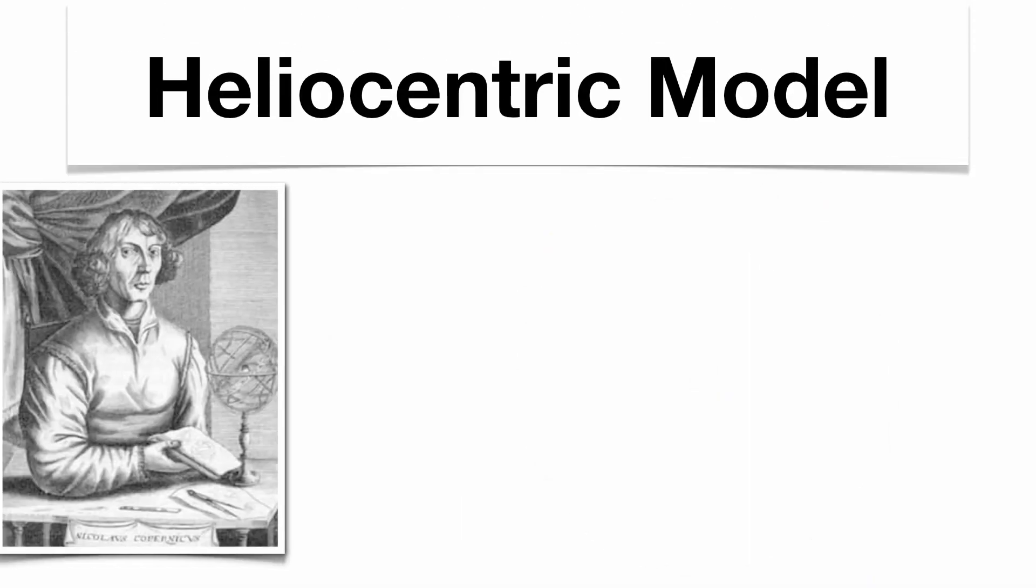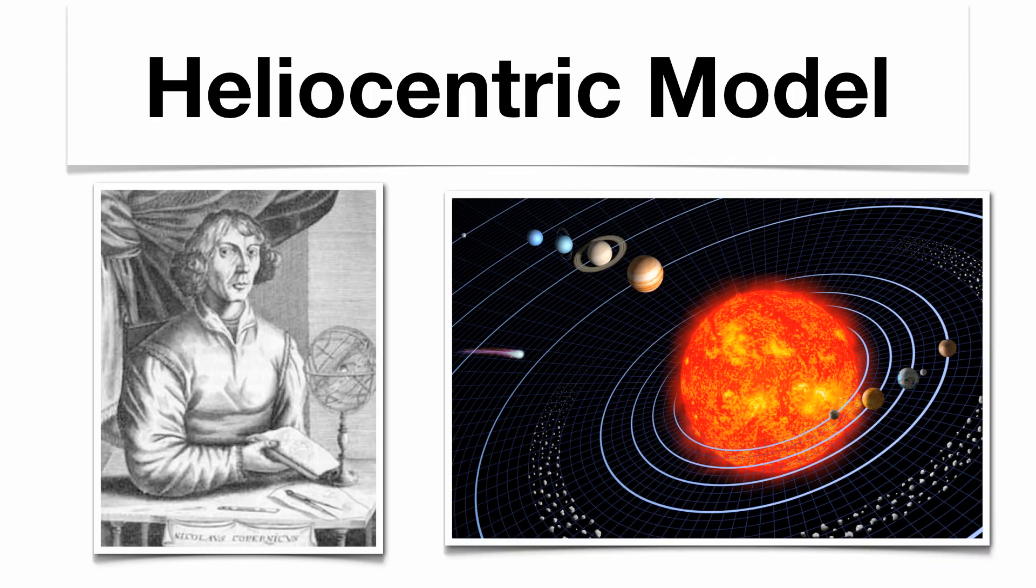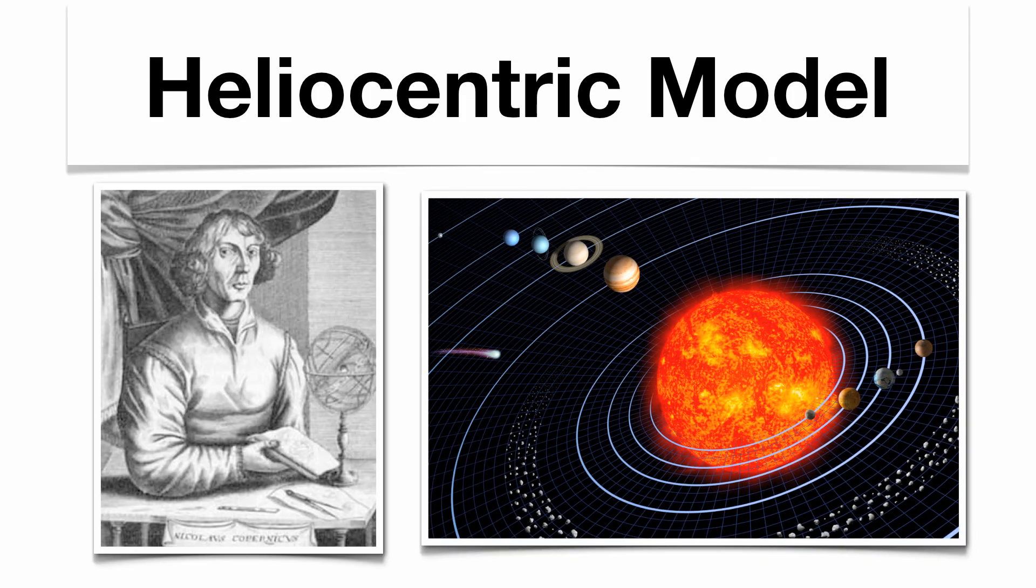It wasn't until Copernicus came around with the heliocentric model, which basically removed the Earth from the center of the solar system and put the Sun. And obviously this is going to be the model that was used today. So we have the geocentric model, the Earth-centered, the heliocentric model, the Sun-centered.